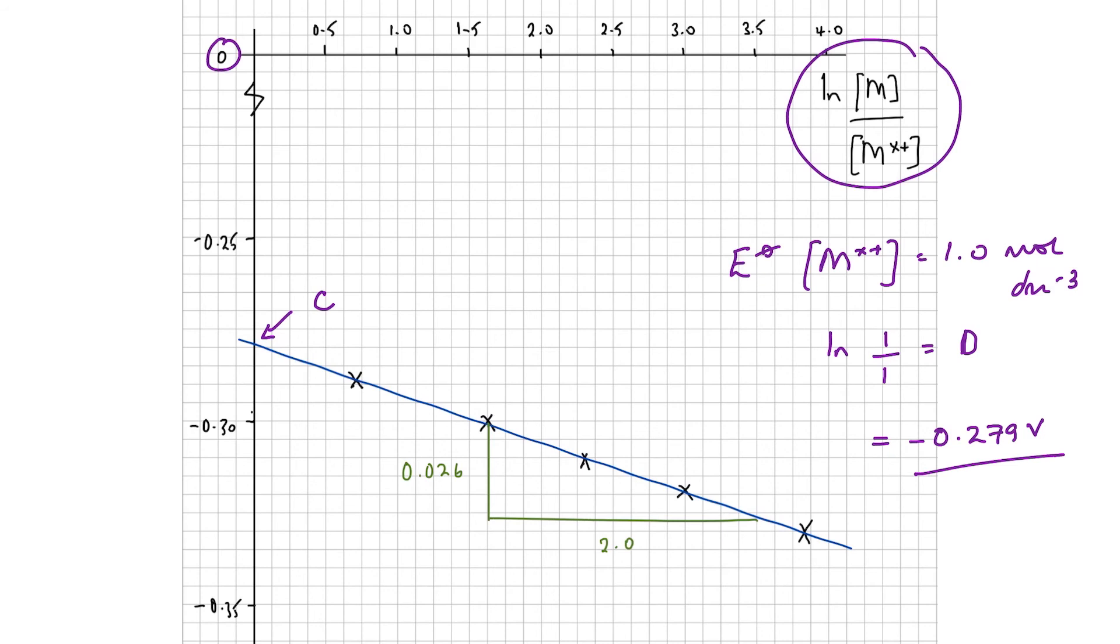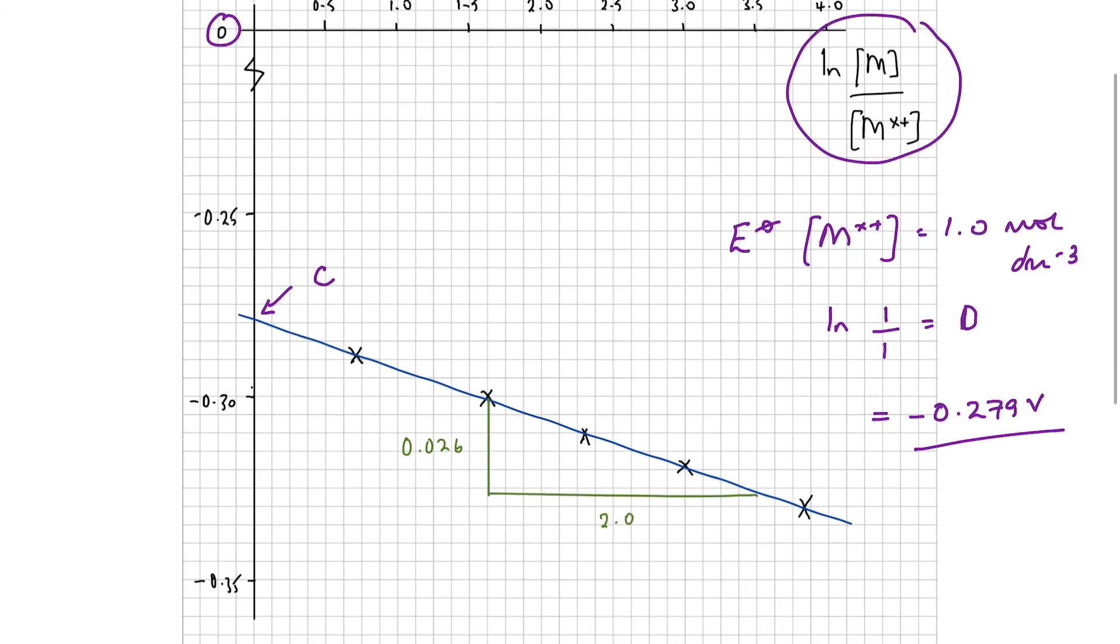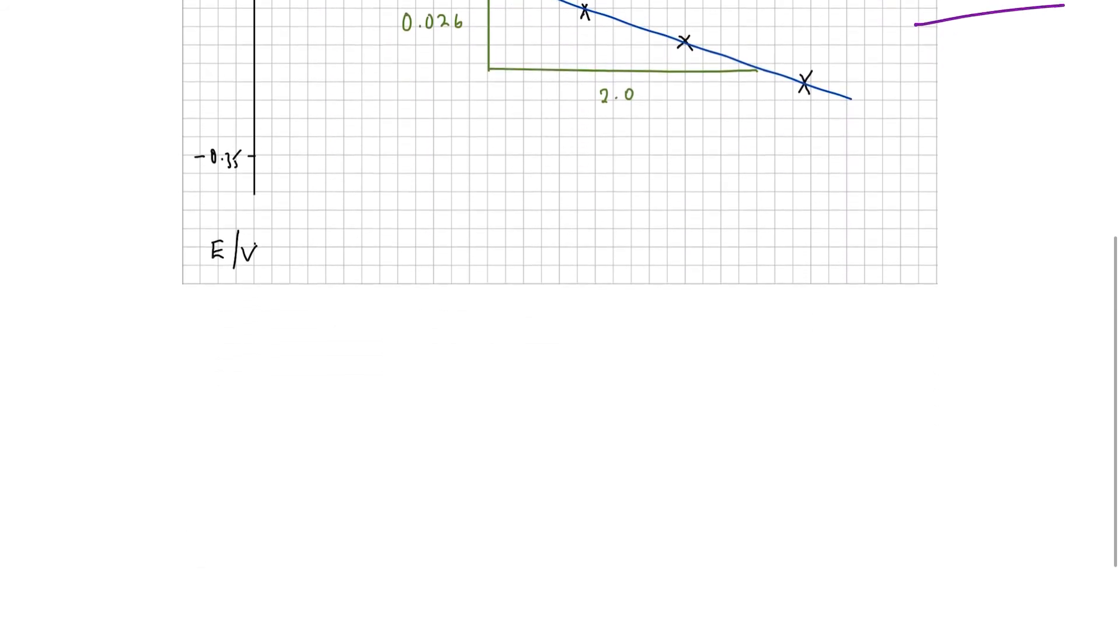The second thing we were asked to find was a value for the charge on the ion. So we need a value for z, as in E equals E° minus RT over zF, ln reduced over oxidized. So this is what we need a value for, and in the y equals mx plus c, this is equivalent to m, the gradient.